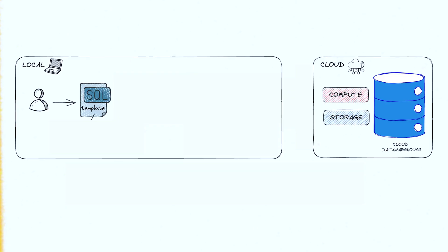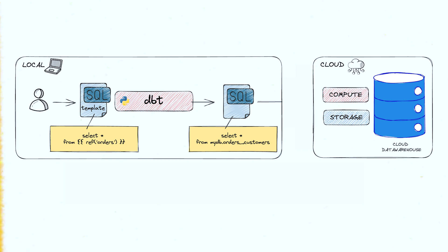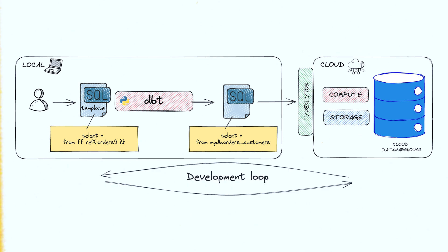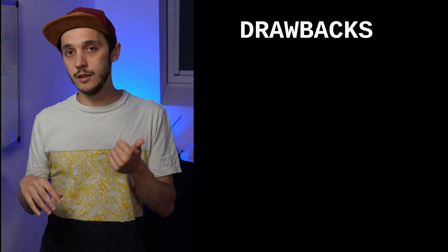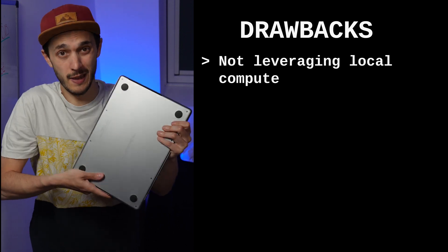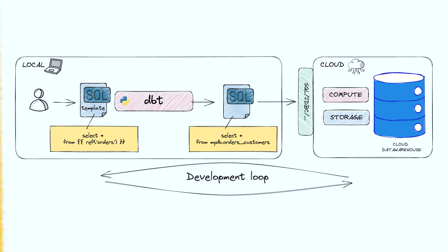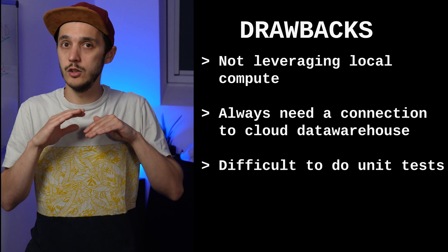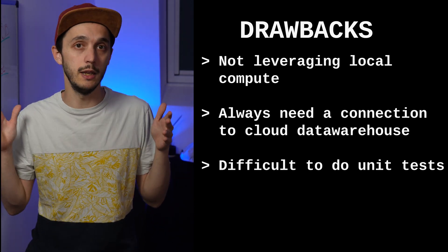Let's look at the classic architecture when working with dbt. Users write SQL templates, which are built into actual SQL files by dbt within a Python process acting as a JDBC client, to execute that SQL against your cloud data warehouse. There is an obvious challenge with such a setup. You are not leveraging your local compute — that expensive MacBook Pro your company paid for. You must always be connected to your cloud data warehouse for any development. And it's hard to do real unit tests locally or within your CI pipelines. By definition, these tests should not involve interaction with APIs or services — they should be isolated.